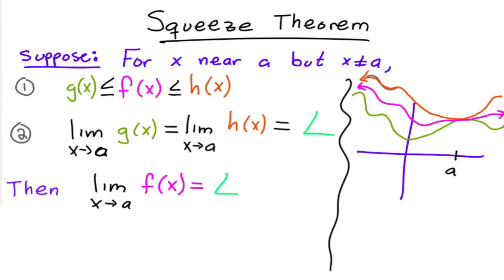It has to be near a, so it could be bigger or less than, it doesn't have to be always in between. For example it could come down here, but all we're saying is that near a it's always in between.